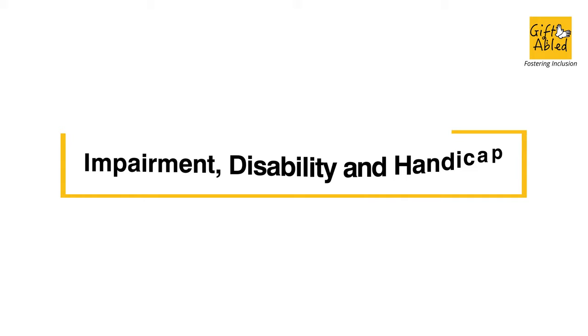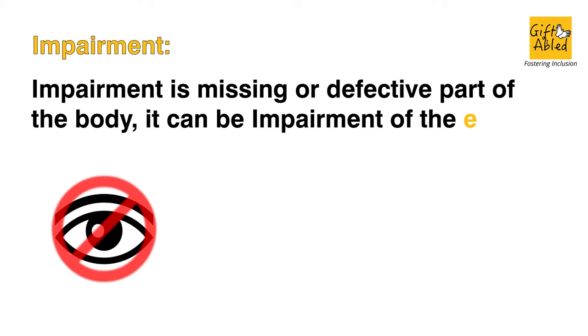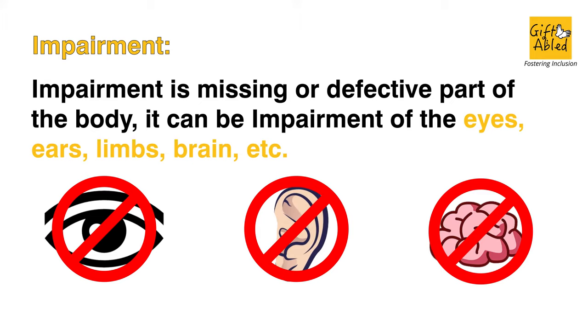Impairment, disability, and handicap. Impairment is a missing or defective part of the body. It can be impairment of the eyes, ears, limbs, brain, etc. Example: loss of a limb.